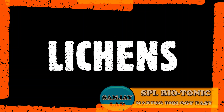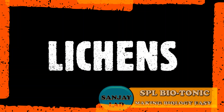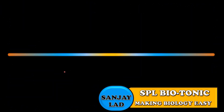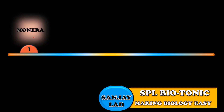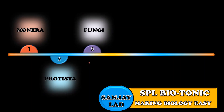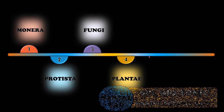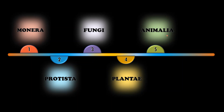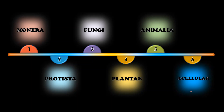Hello everyone. Welcome to one more video of special Biotonic. Students, so far we have discussed about the features of five kingdom classification — that is kingdom Monera, Protista, Fungi, Plantae and Animalia. We have also talked about the acellular organisms like viruses.